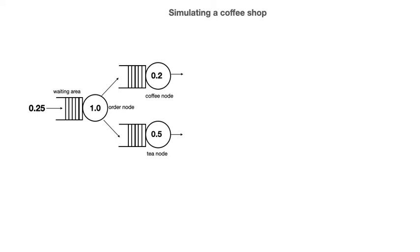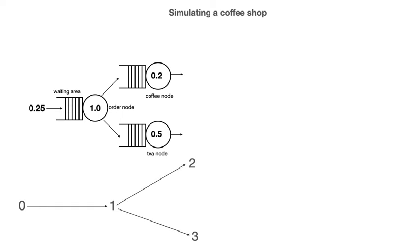Let's consider one final example: how queuing tool can be used to simulate the coffee shop described in this week's assignment. Remember that there are three queues in this coffee shop. Agents stand in the first queue and give their order for either coffee or tea to a teller. Agents who want tea then stand in a queue to get tea, while those who want coffee stand in the queue to get coffee. The network will have four nodes: node 0, node 1, node 2, and node 3. The edge connecting nodes 0 and 1 has the queue for giving the order to the teller, the edge connecting nodes 1 and 2 has the queue for coffees, and the edge connecting nodes 1 and 3 has the queue for teas.